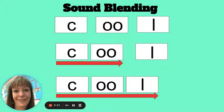Let's say the individual sounds. K, OO, L. Now let's blend the first two. KU, L. Now let's blend them all. Cool. The word is cool.